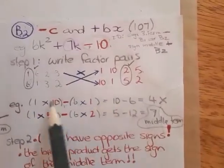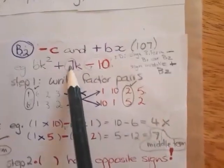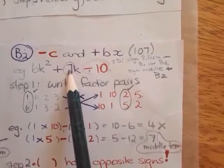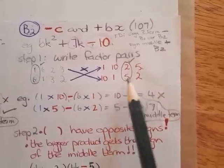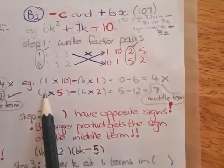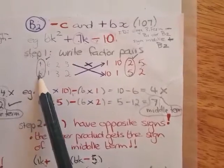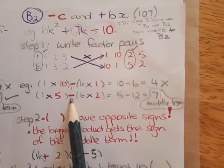Remember, the difference of these factor pairs must give you the middle term. That's why you actually do it. Then I have chosen this one and that one. So I cross multiply. 1 times 5, 1 times 5, and 6 times 2, 6 times 2. We must subtract those.